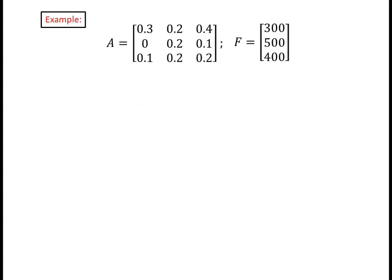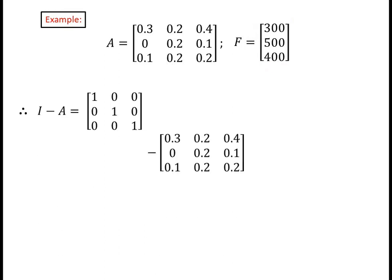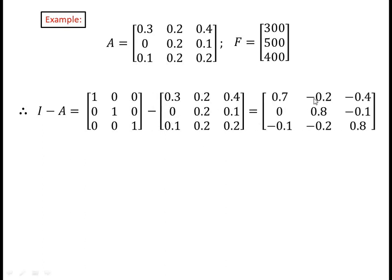For a numerical example, if the input coefficient matrix A is given and the final demand vector f is given, then I minus A — that is, the identity matrix minus the input coefficient matrix — is equal to the matrix with entries 0.7, -0.2, -0.4 in the first row, and corresponding values in the remaining rows.